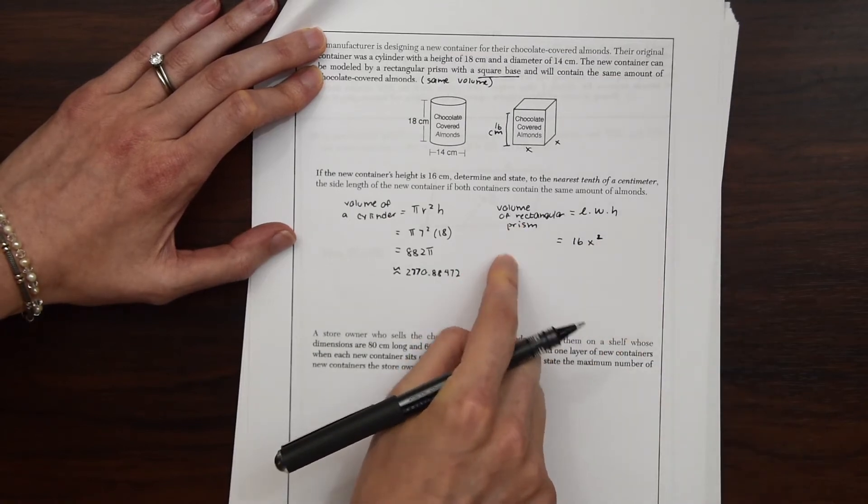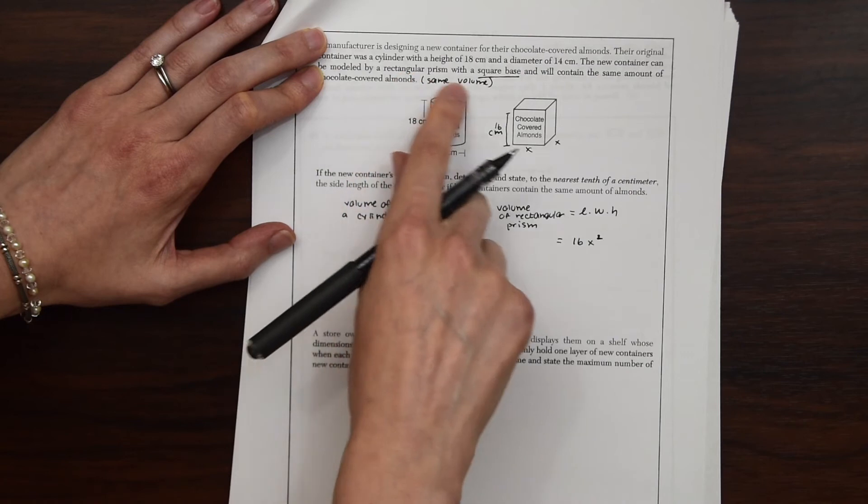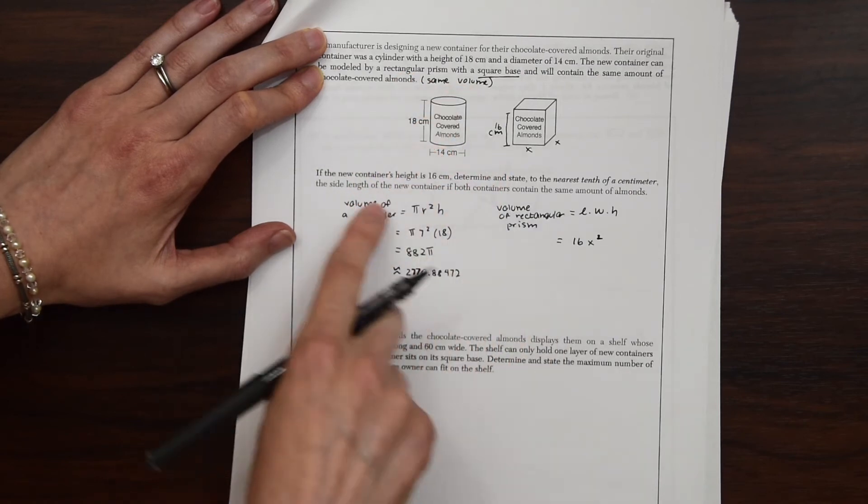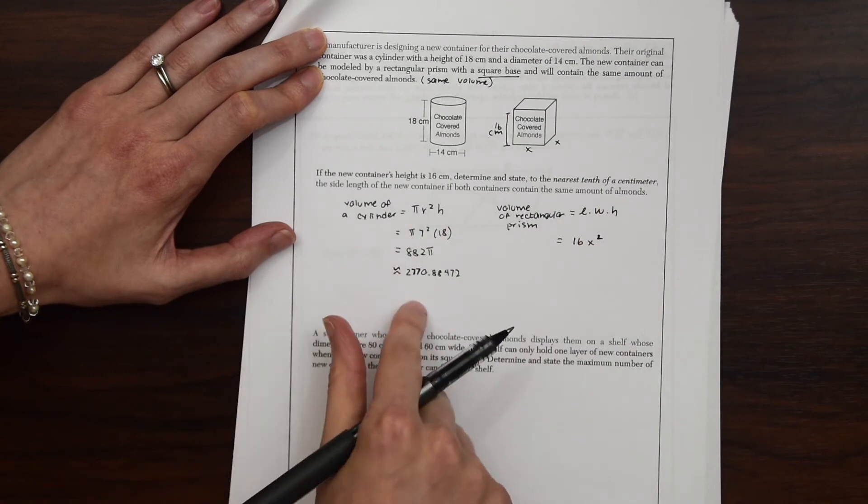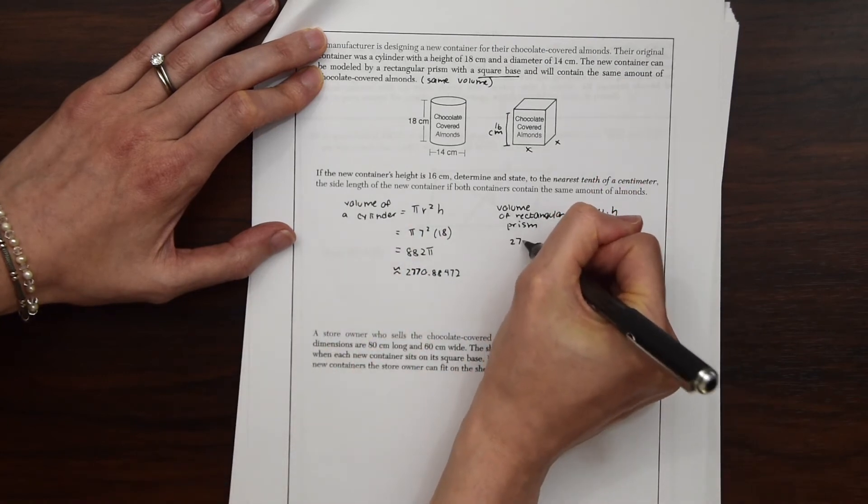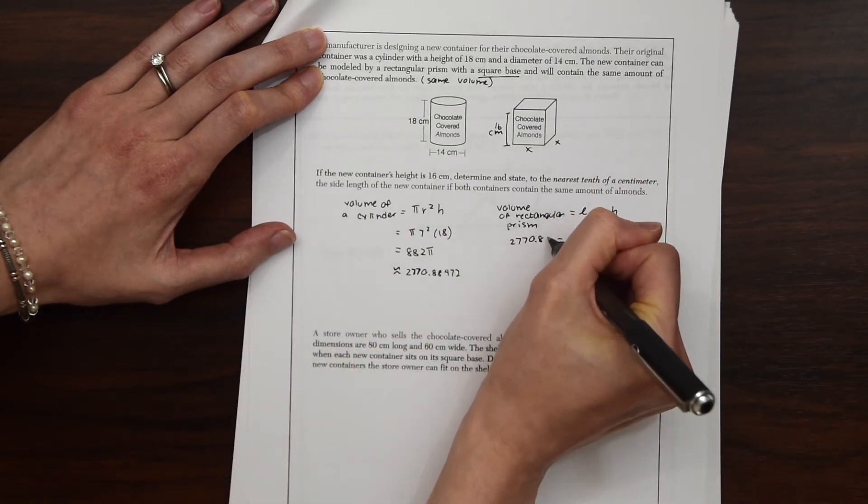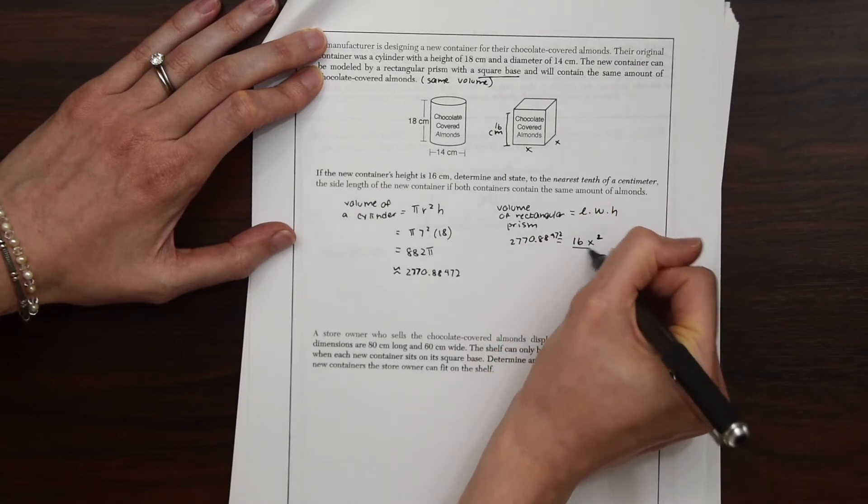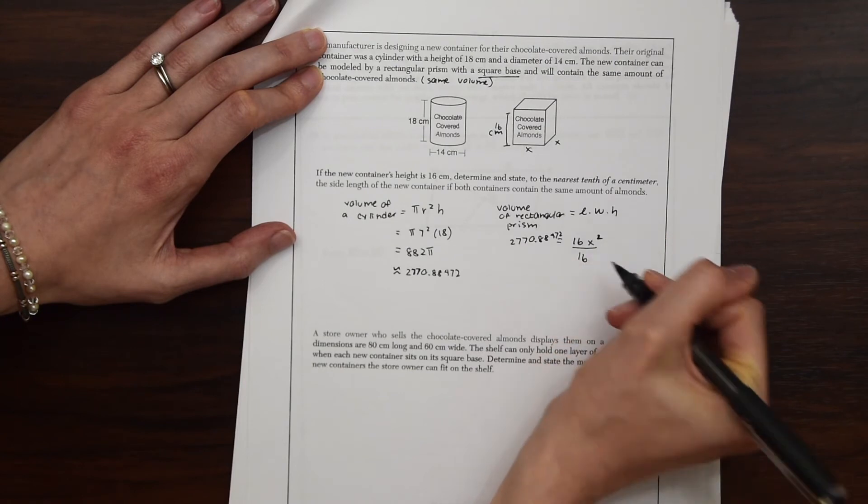And on the other side, the volume, we know because they said that it's the same volume as the other container. So this is going to have the same volume as the cylinder. So we know we could just set this equal to 2770.88472. And then we could just do the little algebra and find the value of x.